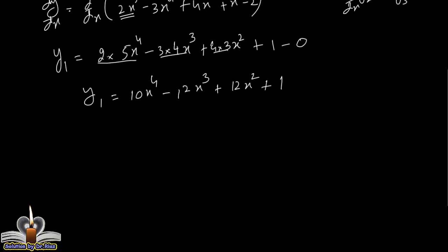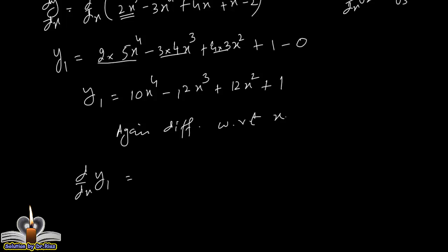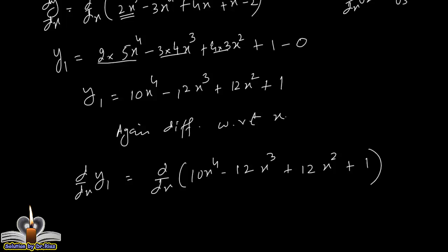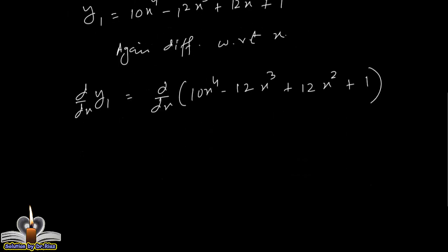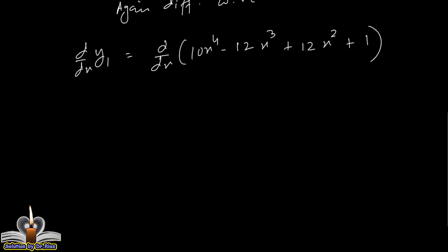Now again differentiate with respect to x. y1 کو differentiate کر رہے ہیں، تو right side کو بھی with respect to x differentiate کریں گے: d/dx (10x⁴ - 12x³ + 12x² + 1). جب ہم اس کو differentiate کریں گے تو یہ y2 آجاتا ہے — y1 کو differentiate کیا تو y2.